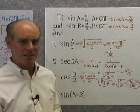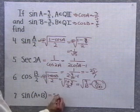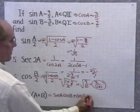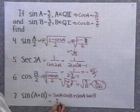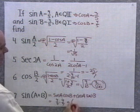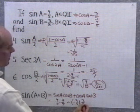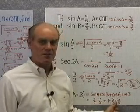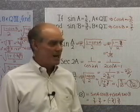Now we want to find the sine of a plus b. Using the sum formula, sine of a plus b equals sine a cosine b plus cosine a sine b. Sine a is 4 fifths, cosine b is 4 fifths, cosine a is negative 3 fifths, and sine b is 3 fifths. Multiplying and adding those fractions, I get 16 twenty-fifths minus 9 twenty-fifths, which is easy to simplify.